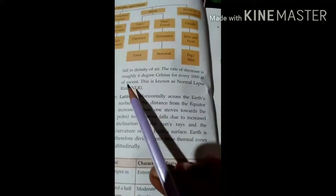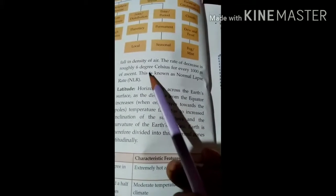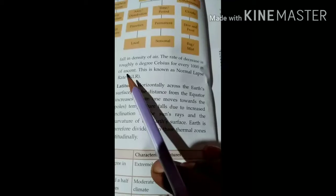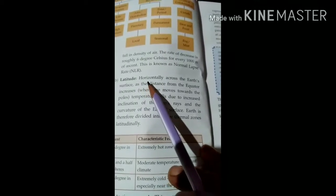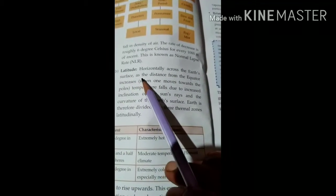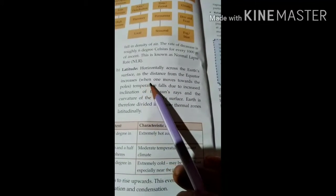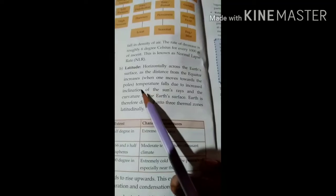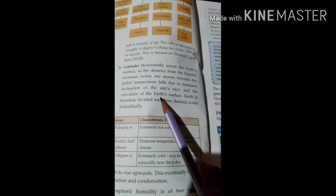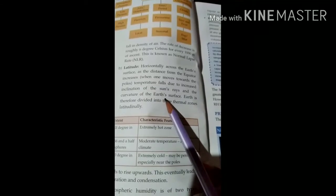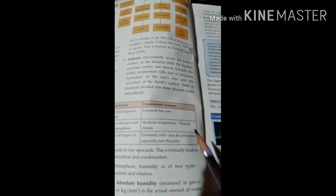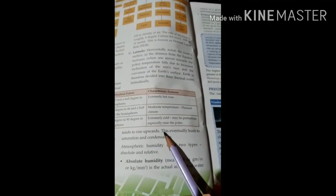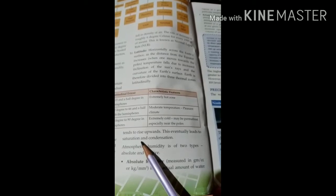The rate of decrease is regularly 6 degrees Celsius for every 1000 millimeters of ascent, known as normal lapse rate. Latitude horizontally across the earth's surface, as distance from the equator increases, temperature falls due to increased inclination of the sun's rays and the curvature of the earth's surface. Earth is therefore divided into three thermal zones latitudinally, which tend to rise upward, eventually leading to saturation and condensation.